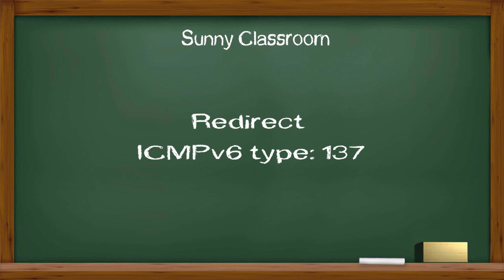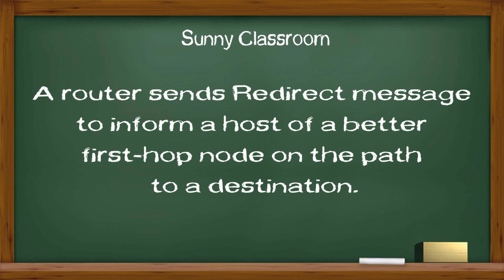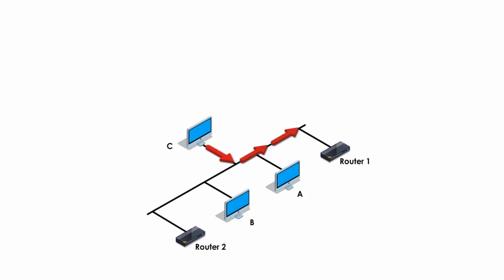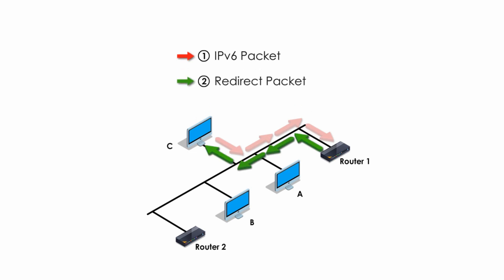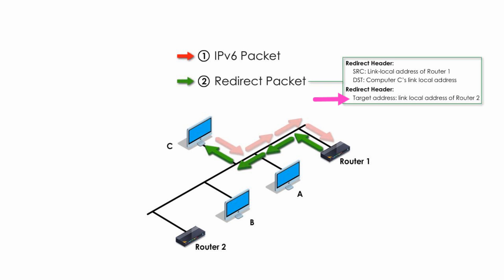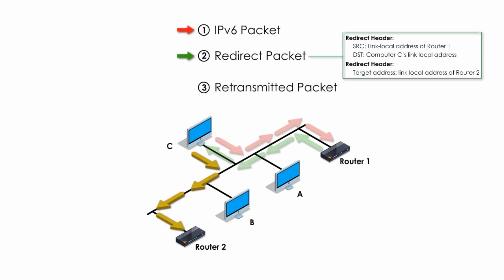Last but not least, Redirect. A router sends a Redirect message to inform a host of a better first-hop node on the path to the destination. The better first hop could be a different router or the destination itself. For example, when Computer C sends packets to Router 1, Router 1 sends a Redirect message back to Computer C, telling it to use Router 2 instead. A Redirect message is an ICMPv6 packet with type 137. Source address is the IPv6 link-local address of Router 1, destination is Computer C's local address, and target address is the link-local address of Router 2 — the better first hop to use.